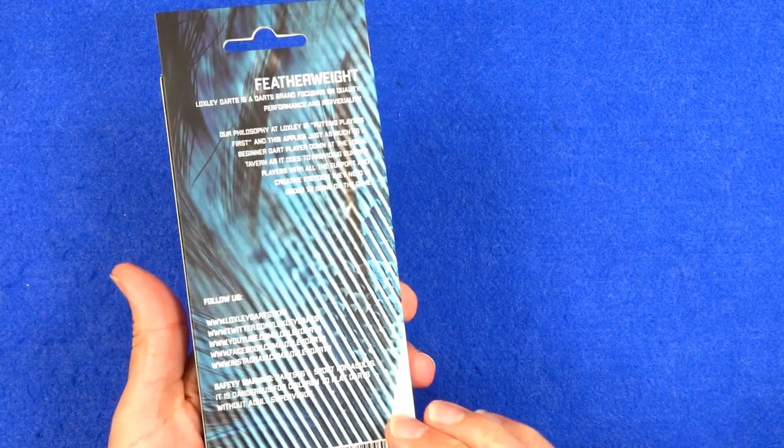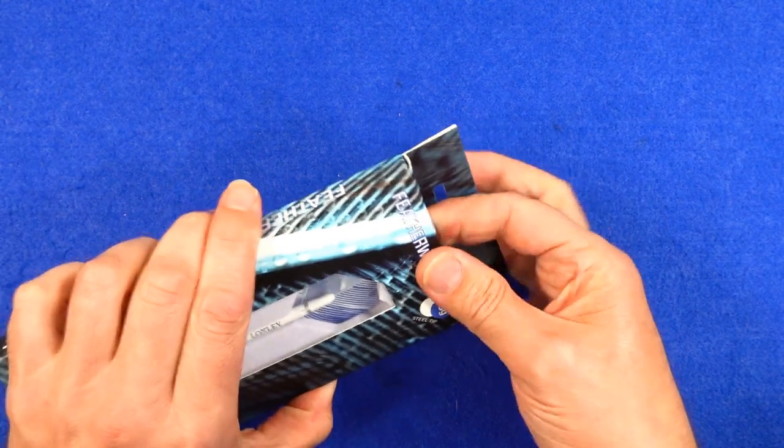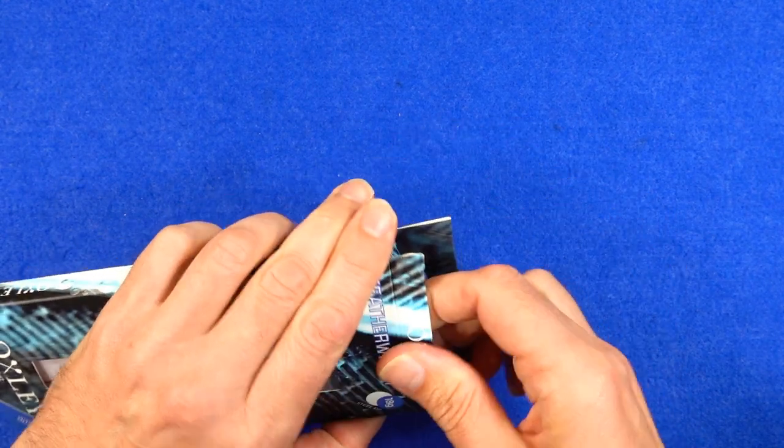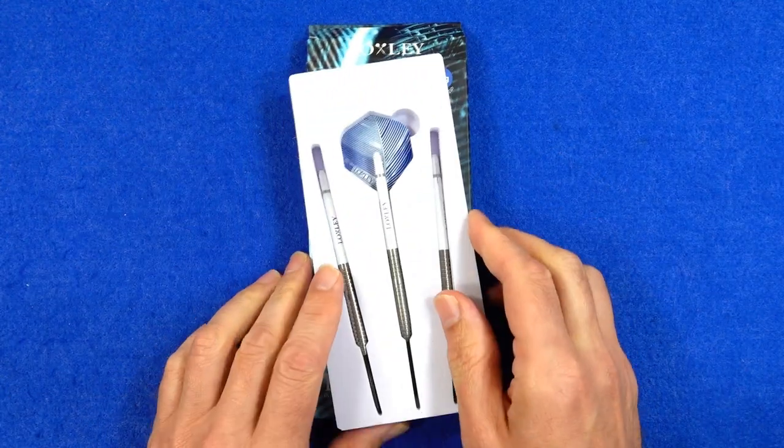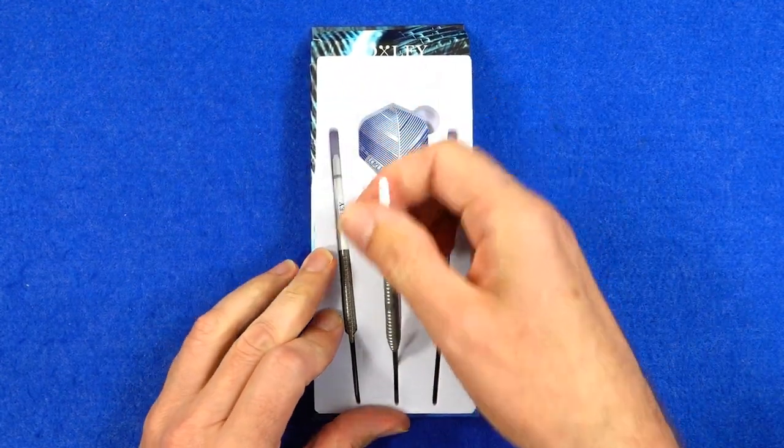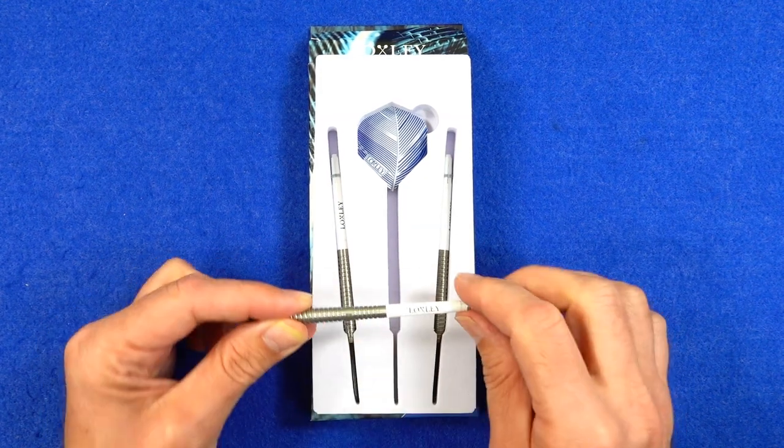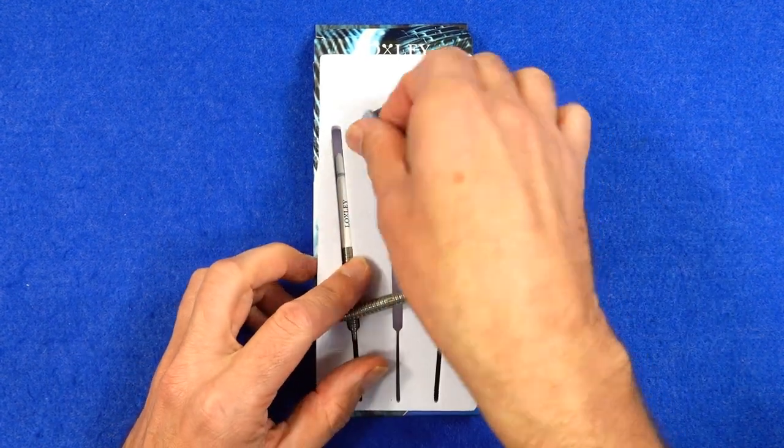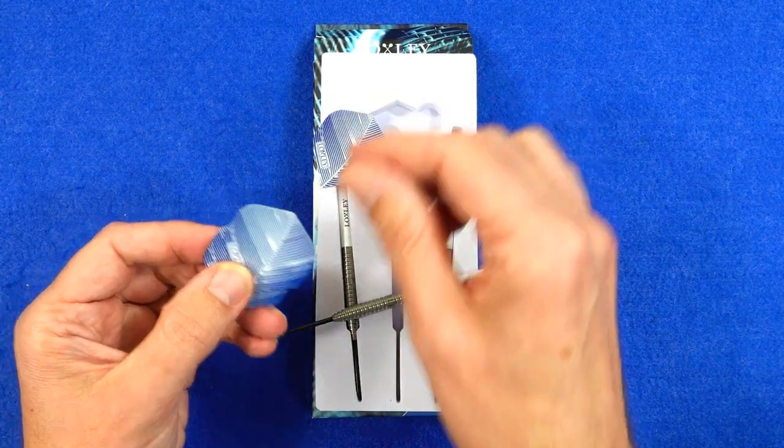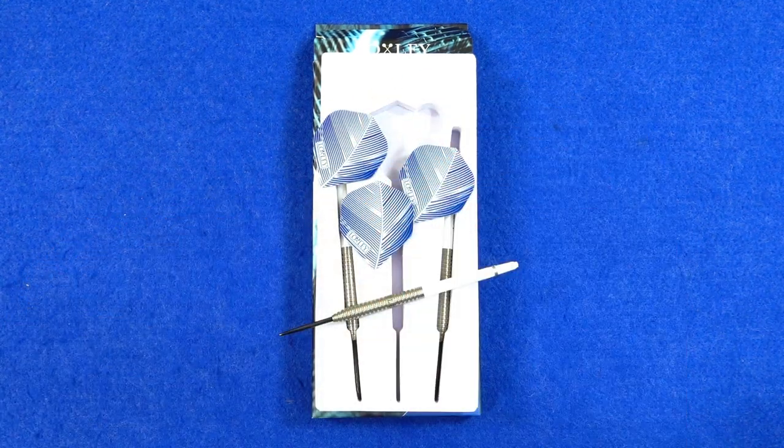The darts come in slim cardboard packaging and obviously this one's blue, same feather graphics on the box as the green ones but in a blue color. Inside, the darts are fitted with Loxley medium nylon stems and they come with Loxley standard shape Feather Effect flights in blue color.